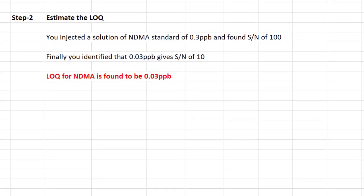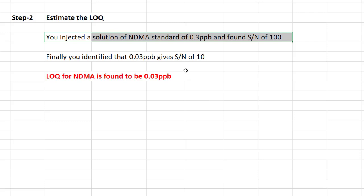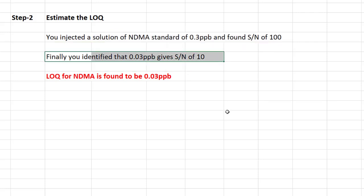Step number two: estimate the LOQ experimentally. You have to practically assess the concentration of your nitrosamine which can give you the required LOQ — for example, in terms of signal-to-noise ratio. You inject a solution of NDMA at, say, 0.3 ppb and find the signal-to-noise ratio is 100. You then identify that 0.3 ppb gives a signal-to-noise ratio of around 10, which meets your LOQ requirement. So your estimated LOQ is 0.3 ppb of NDMA. Step two is completed.